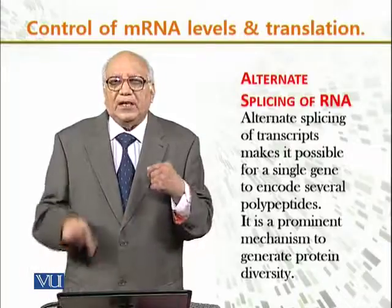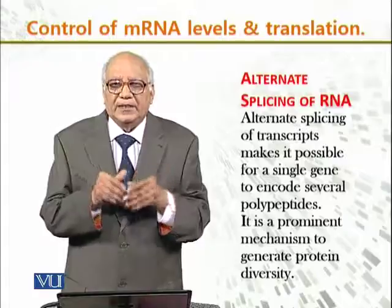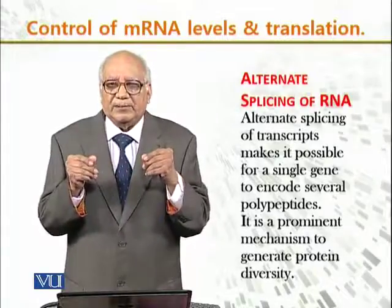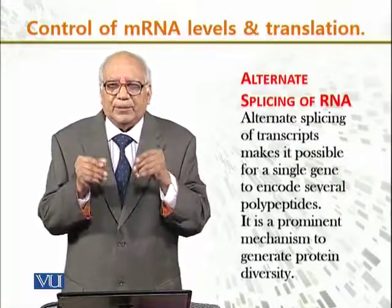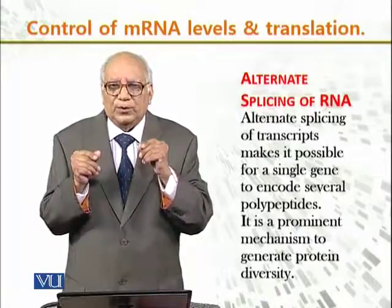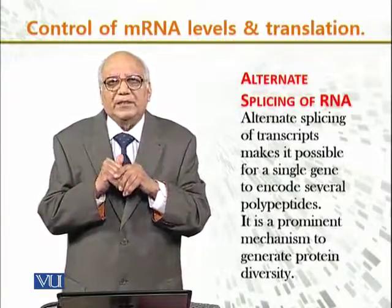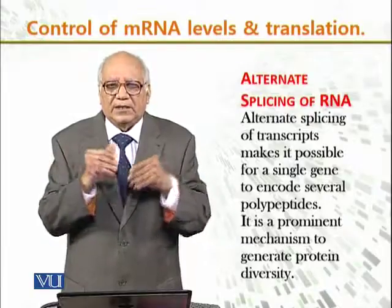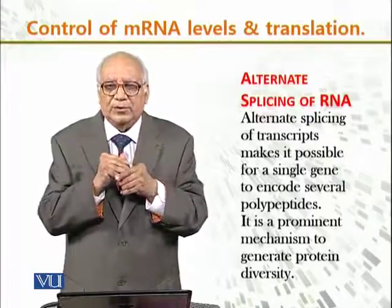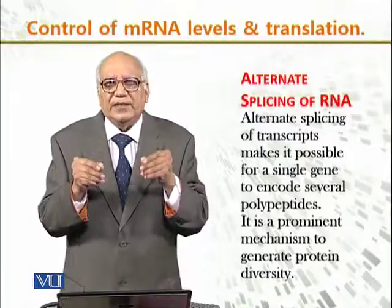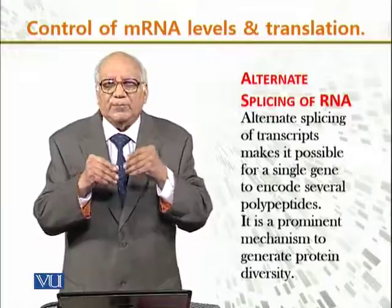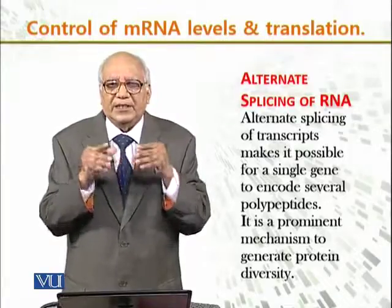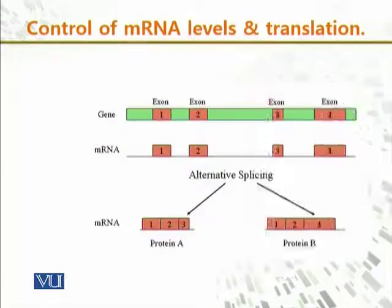Alternate splicing of RNA is another way of controlling the levels of messenger RNA. Alternate splicing of transcripts makes it possible for a single gene to encode several polypeptides, and from several polypeptides, several types of different proteins can be expressed. It is a prominent mechanism to generate protein diversity when cells generate proteins of different natures.